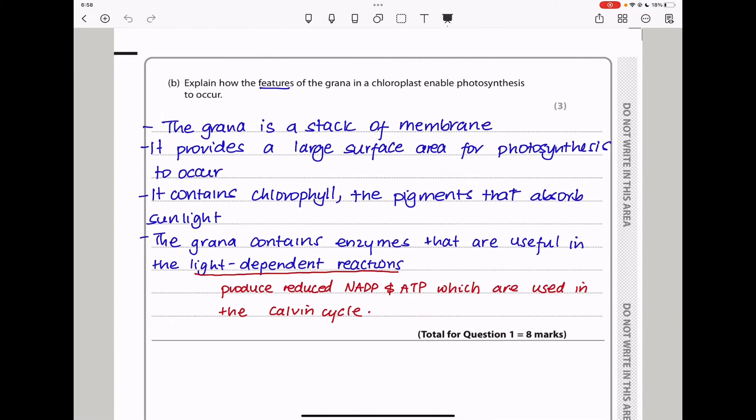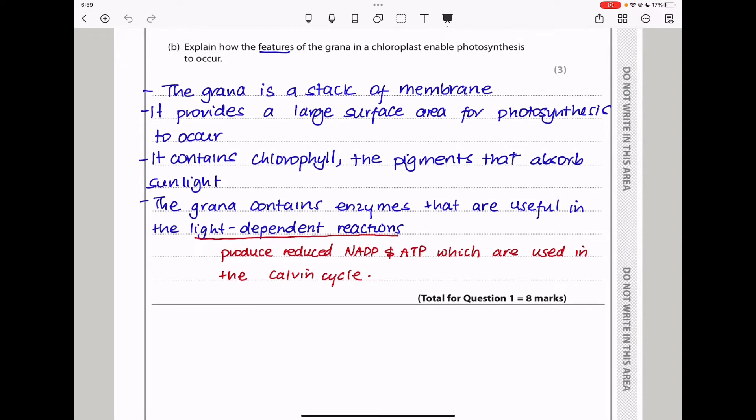Here they say explain how the features of the grana in a chloroplast enable photosynthesis to occur. We know that grana contains thylakoids. So I say that grana is a stack of membranes. It provides a large surface area for photosynthesis to occur. Photosynthesis partly occurs in the thylakoids. It contains chlorophyll, the pigment that absorbs sunlight. And the grana contains enzymes that are useful in the light-dependent reactions. So this brings us to the end of question one.